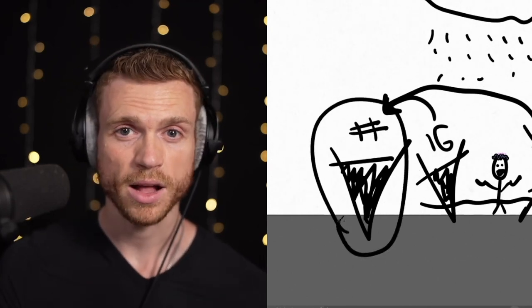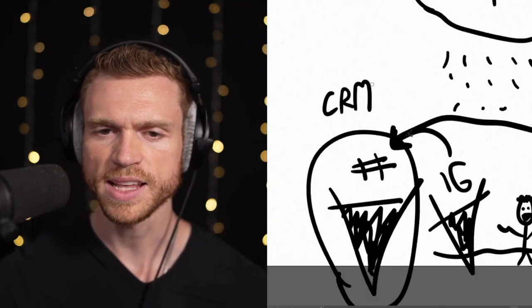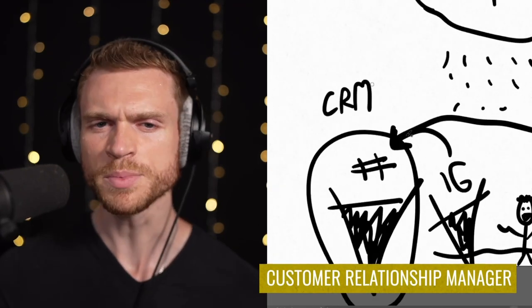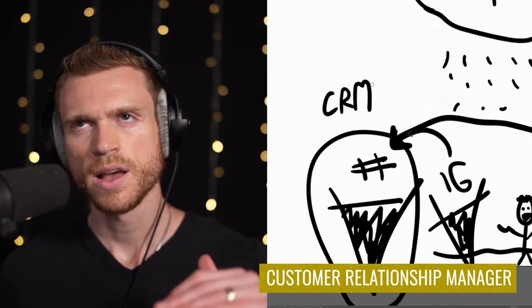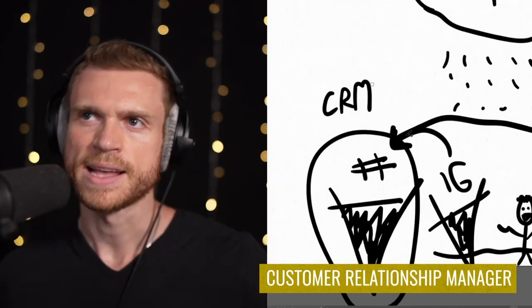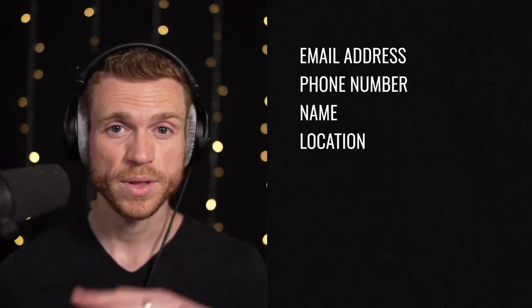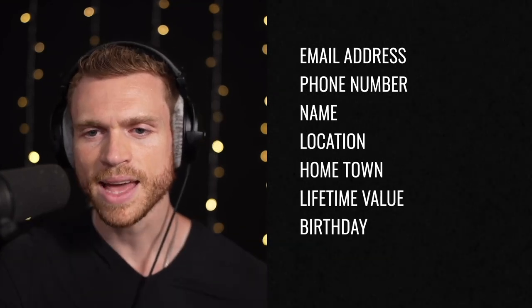You can send out a text message or email to send them anywhere you want. This is what we call a CRM — your list — which stands for Customer Relationship Manager. A CRM basically allows you to have a list of all your fans with their email address, phone number, name, location, where they're from, and other details. That allows you to effectively communicate with your fans — if you're playing a show in New York, you can send out a text to all your fans in New York saying hey, come hang out.